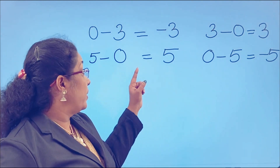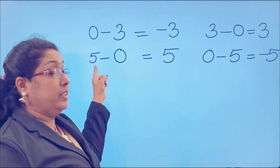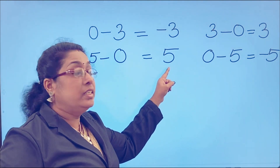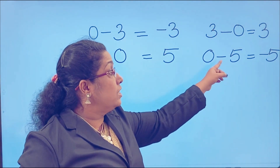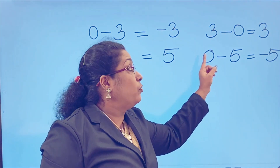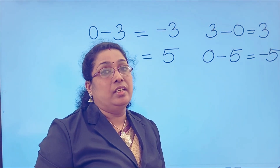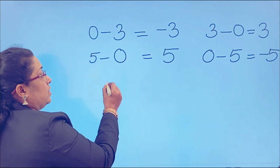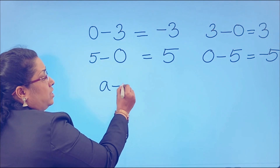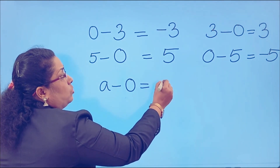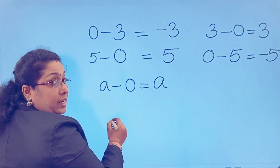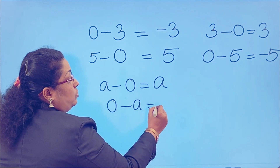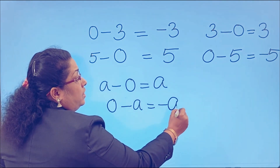That is, if we subtract 0 from an integer, we get the same integer as the answer. And if the integer is subtracted from 0, we get its additive inverse. That is, if A is an integer, then A minus 0 is equal to A, and 0 minus A is equal to negative A.